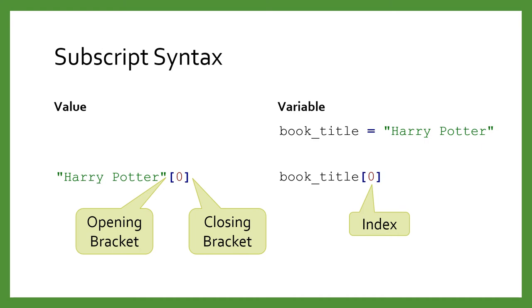We can subscript a string value or variable by using square brackets. Notice the key components. On the left is the name of the variable or the string literal value. Next, we have an opening square bracket. Then we have a number, which is called the index. Finally, we end with a closing square bracket.